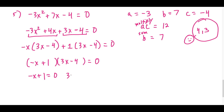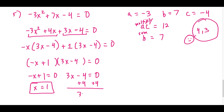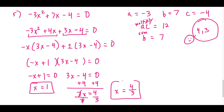Setting -x + 1 = 0 gives x = 1, and setting 3x - 4 = 0, adding 4 and dividing by 3, gives x = 4/3. So we have two solutions to this quadratic equation: x = 1 and x = 4/3.